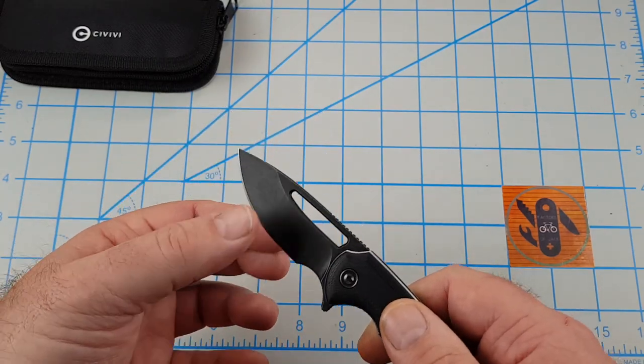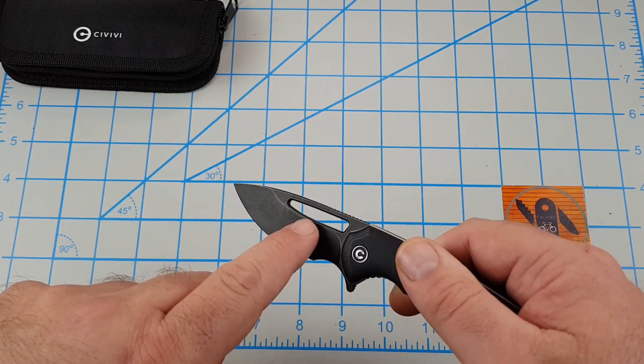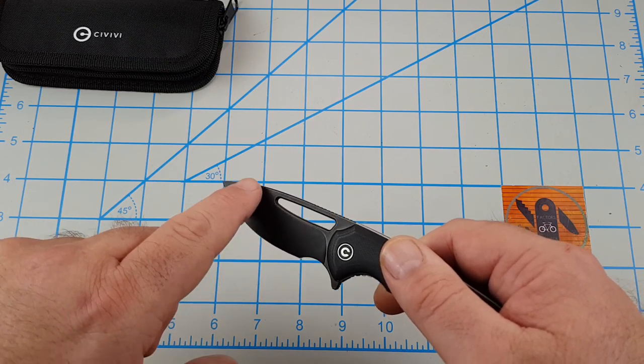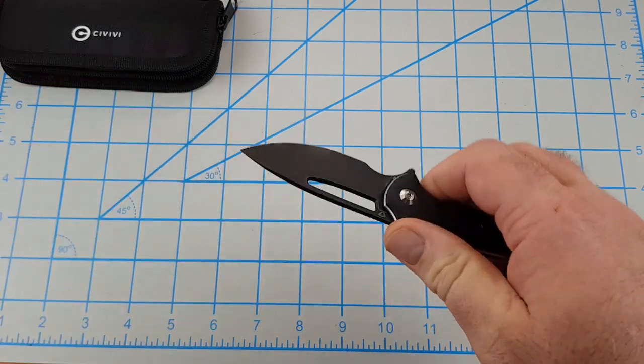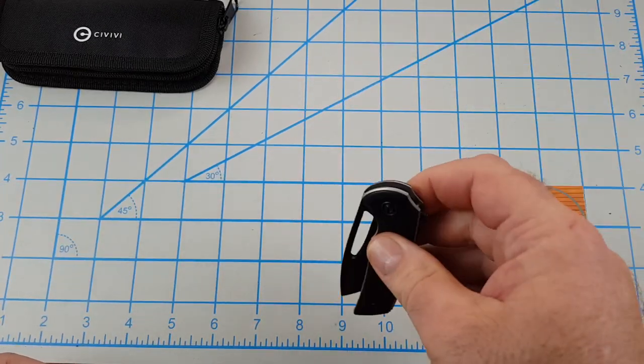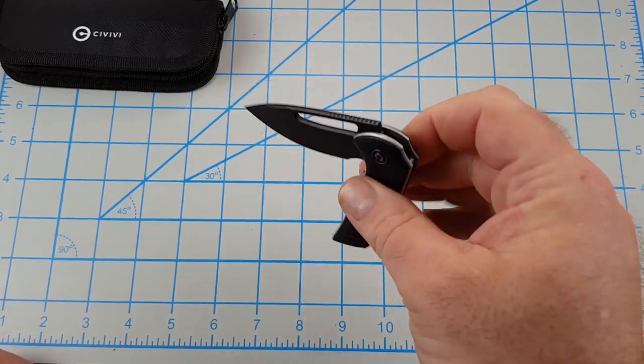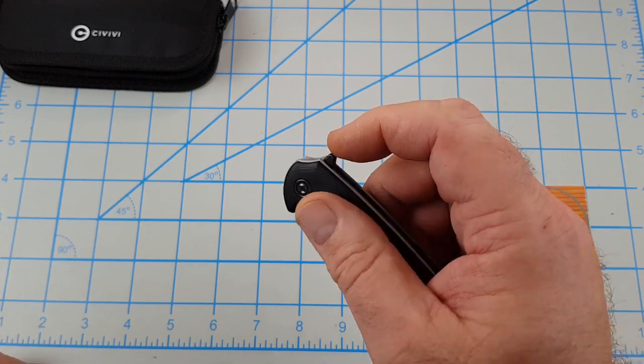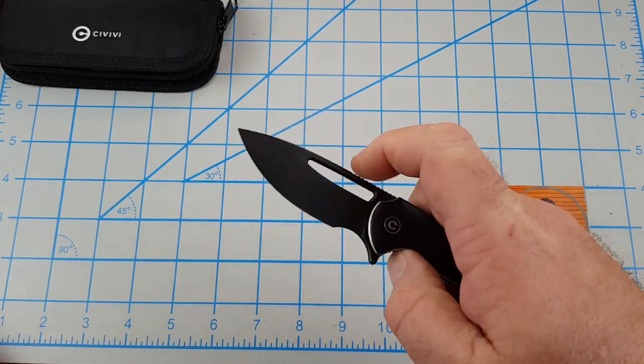The blade thickness is 0.12. You got a flat grind that starts just below the hole. You can see the line, so it's flat ground from here all the way down. This slices pretty good, rides on bearings, pretty good action. Like I said, I just got this today.